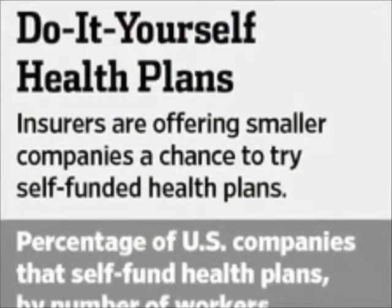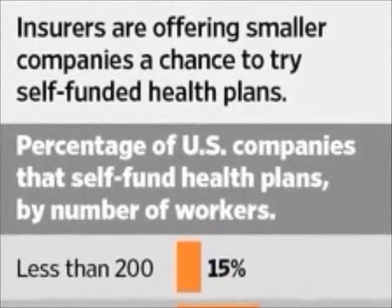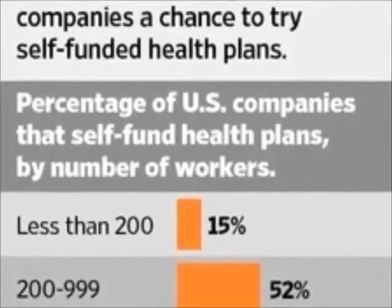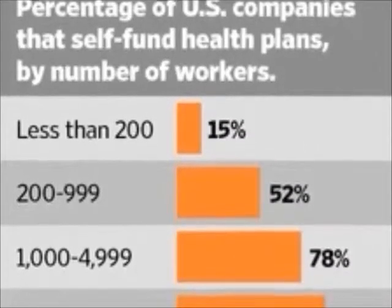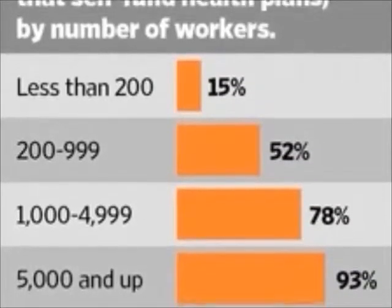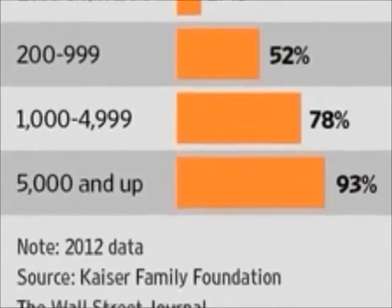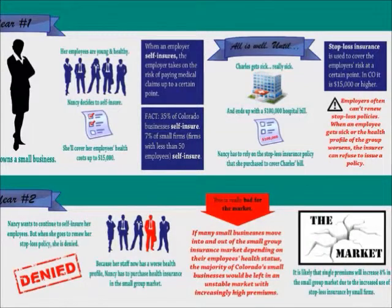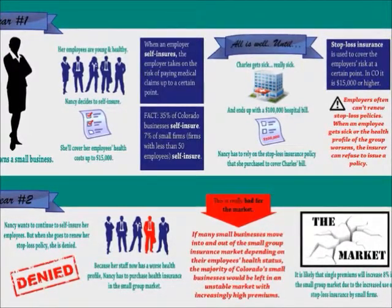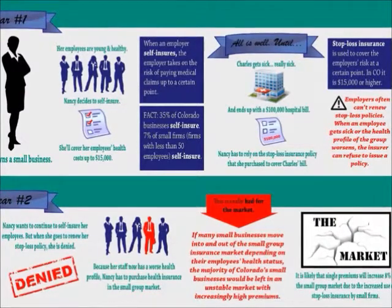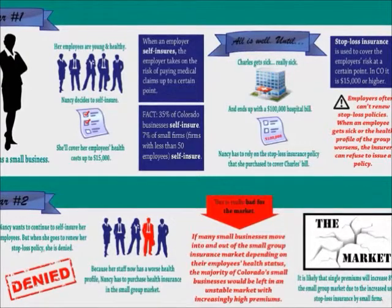Here is 2012 data: companies with 5,000 or more employees have a 93 percent likelihood of being in a self-insured plan. This proportion gradually declines with company size. Companies with fewer than 200 workers have only a 15 percent chance of being self-insured. Large companies are far more likely to be self-insured, and the following scenario explains why.